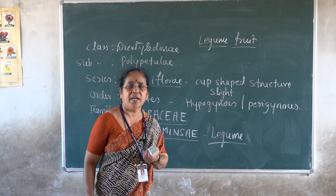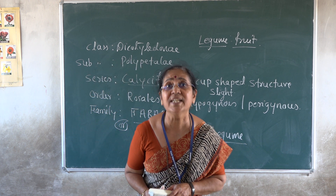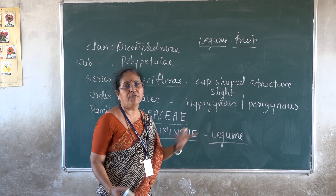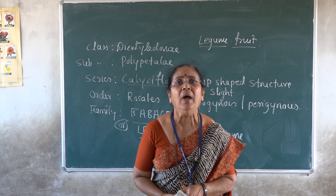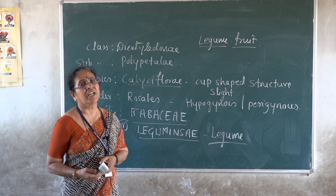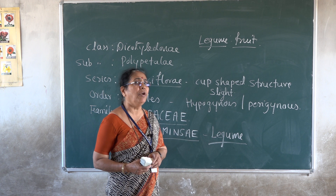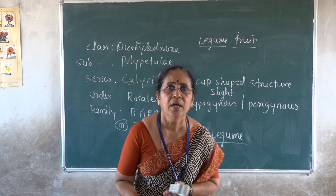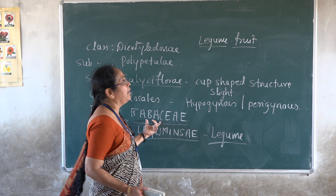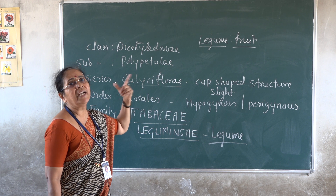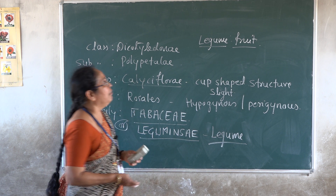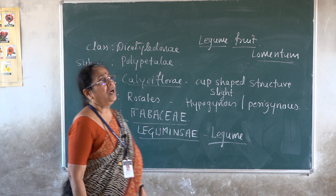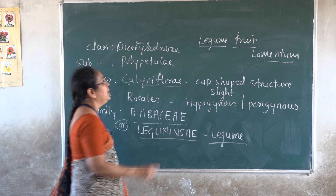Common examples of Fabaceae include Cajanus (dal), Trigonella — all these pulses belong to the family. Apart from that, Mimosa pudica, the touch-me-not plant, is a member. Acacia species, cultivated extensively by the forest department, also belong to Fabaceae. There is another type of fruit called lomentum — a dry fruit where the fruit is constricted, and each constriction contains one seed.